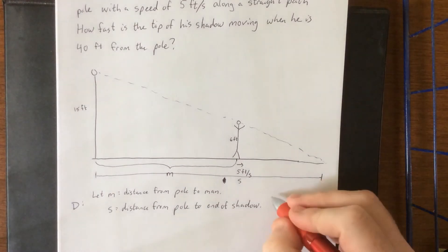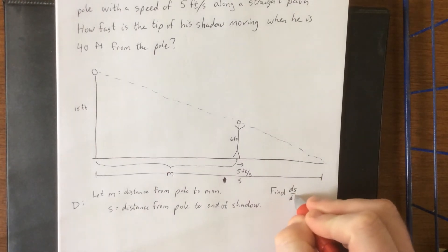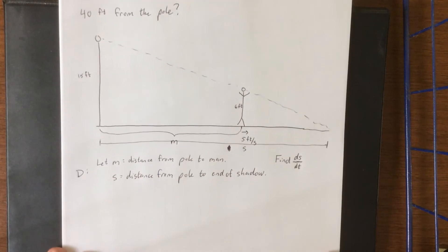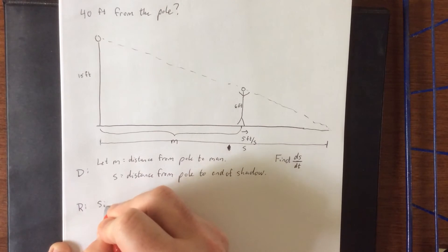Now ultimately the quantity that we're going to be trying to find, we're going to try to find dS/dt. That is the speed of the tip of the shadow relative to an unmoving object. And I think that the unmoving part is going to be especially important. Now to relate the variables together, we are going to use similar triangles.